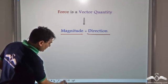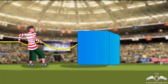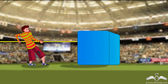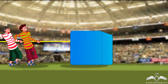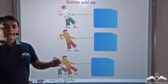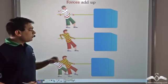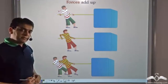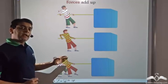Now let us notice something. This boy is trying his level best to make this box move by pulling it, but he is unable to do so. Boy number two is also trying his level best to make the box move by pulling it, but even he is unable to make it move. But notice what happens when both boys start pulling together in the same direction — the box moves.